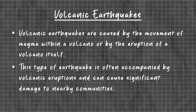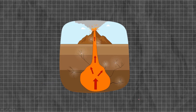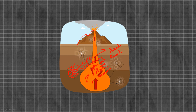Volcanic earthquakes are caused by movement of magma within a volcano or by the eruption of the volcano itself. This type of earthquake is often accompanied by volcanic eruptions and can cause significant damage to nearby communities. Here is an image of a volcano where magma moves upward with pressure. Due to this pressure, there will be some cracks in the Earth's crust which are called seismic points, and the movement caused by volcano pressure leads to an earthquake. These are called volcanic earthquakes.